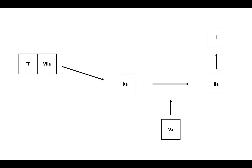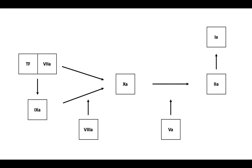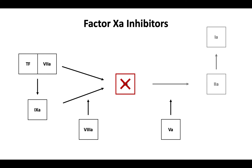Thrombin then converts fibrinogen to fibrin. Let's also bring in part of the intrinsic pathway, with factor IX acting in the presence of its cofactor, Va, to activate Xa. The factor Xa inhibitors work directly against factor Xa to inhibit its activity, thus turning off thrombin generation and fibrin formation.